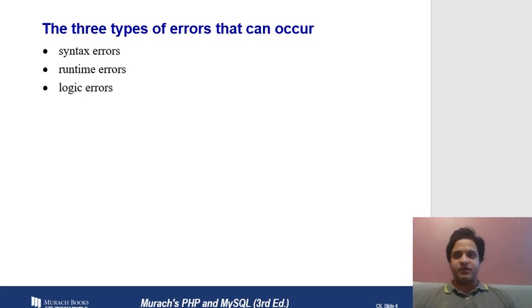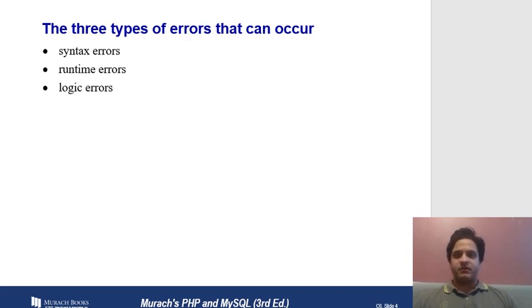A runtime error in a web application might look like this: you open a PHP application in a browser, give some input, and instead of output you get an error. For example, a form accepting integer input but receiving a string — the operations designed for integer input won't work with a string, causing a runtime error.